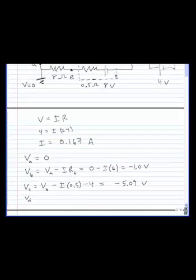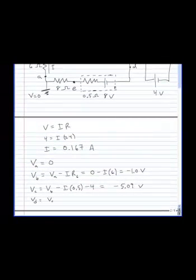The voltage at D is going to be the voltage at C minus I times 9 ohms. And that gives me negative 6.59 volts.